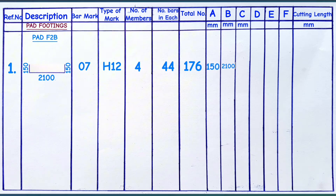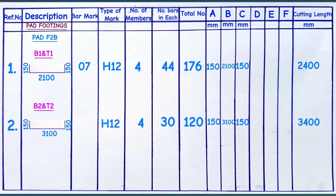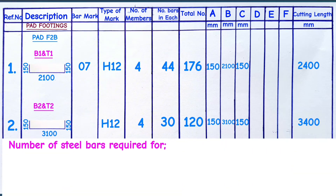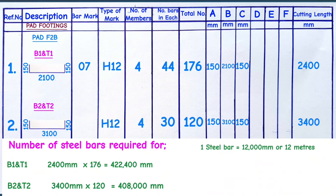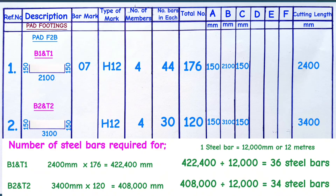Under the dimensions, we have 150mm, 2.1 meters, and 150mm. When we add these three, we get 2.4 meters as the cutting length. As the engineer on site, you will tell the steel fixers to cut 176 pieces of 2.4 meters each to accommodate bottom and top steel bars for bases F2B. To get the number of full bars to purchase: 2.4 meters multiplied by 176 pieces equals 422.4 meters. Divided by 12 meters standard bar length, you get 36 steel bars of Y12 to purchase.